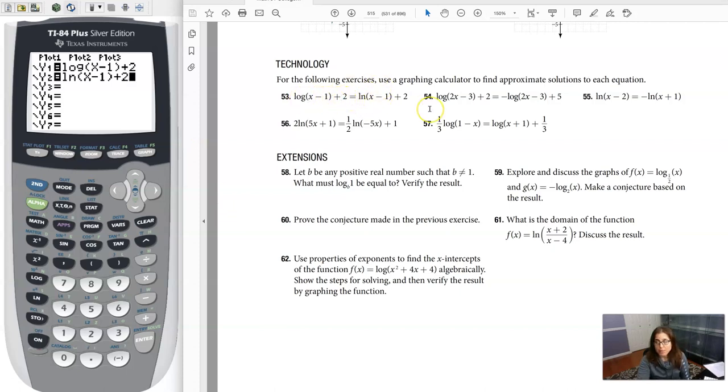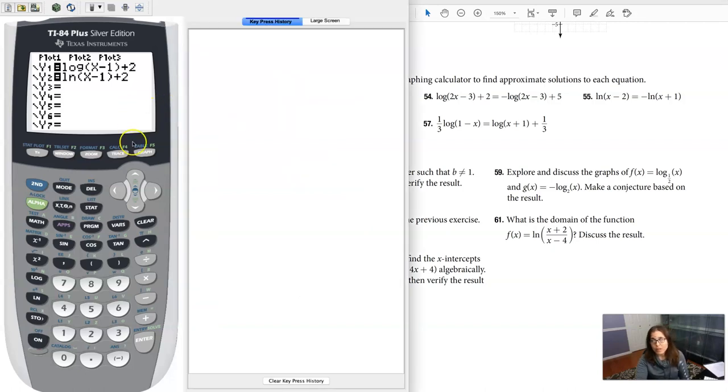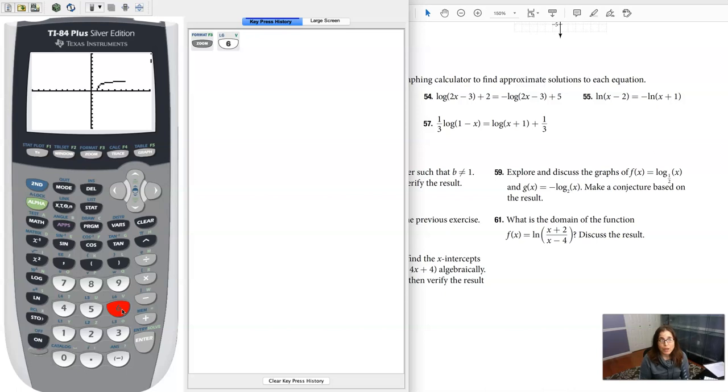So it's just setting each part of the equation, the left and right part, into different y equals and we're going to hit zoom 6 and we're going to see where those graphs intersect.